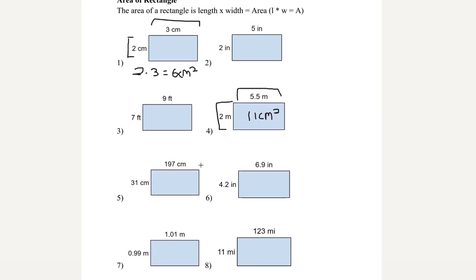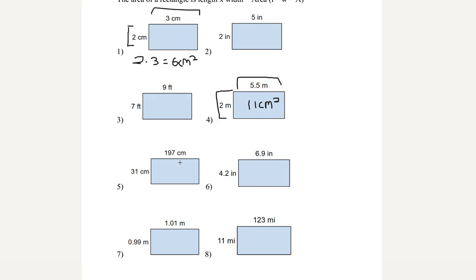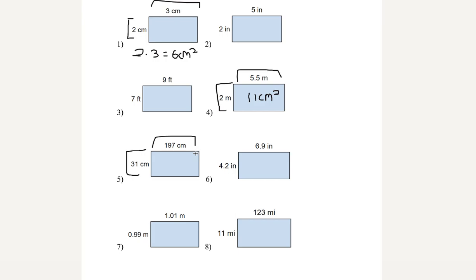Let's try some harder examples. Let's try number 5. We have 31 and 197. Like I said, we just multiply the width by the length. The order doesn't matter. And 31 times 197 is equal to 6,107 centimeters squared.